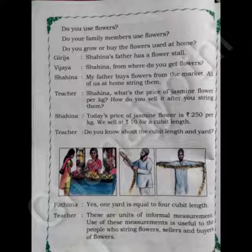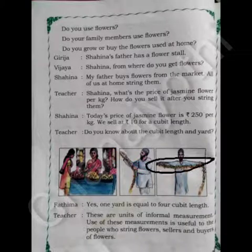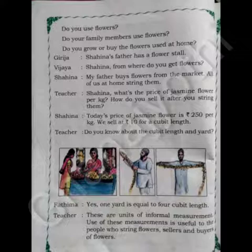Observe this picture, children. One cubit means from the middle finger to the elbow. One add means from one hand's middle finger to the other hand's middle finger. One add is equal to 4 cubit lengths. Teacher says these are units of informal measurement, useful to people who string flowers, and sellers and buyers of flowers.